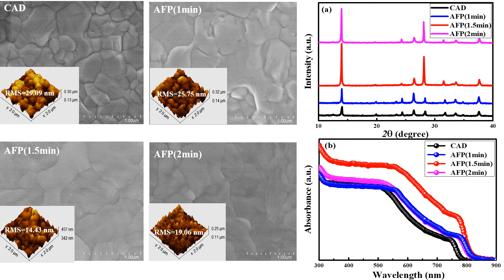To know the crystal structure of the prepared thin films, we examined the SEM images. For CAD and AFP at 1.5 minutes, the morphology was quite different. The 1.5-minute fumigation process showed large grain size, with pin holes reduced at the grain boundaries.